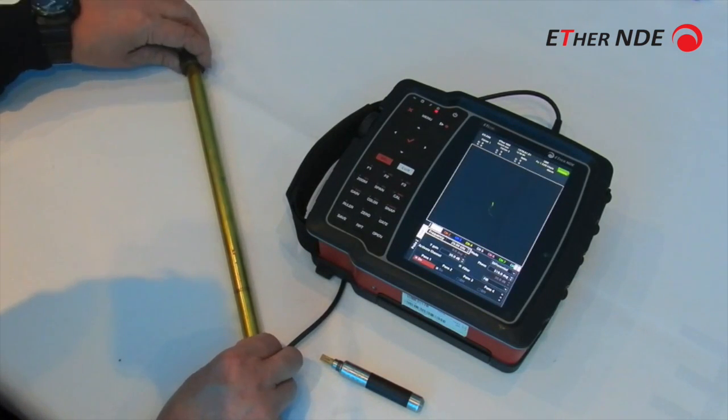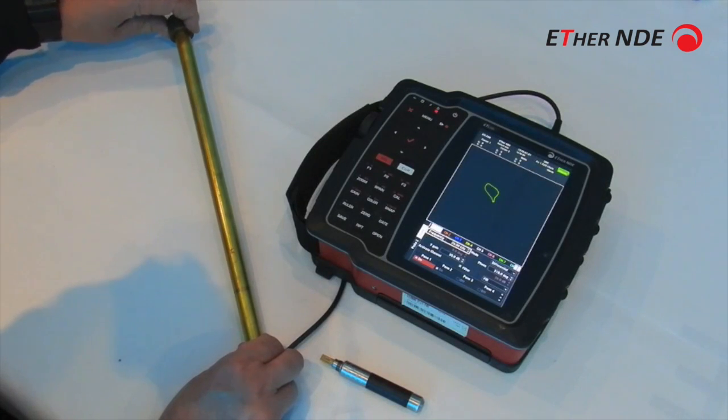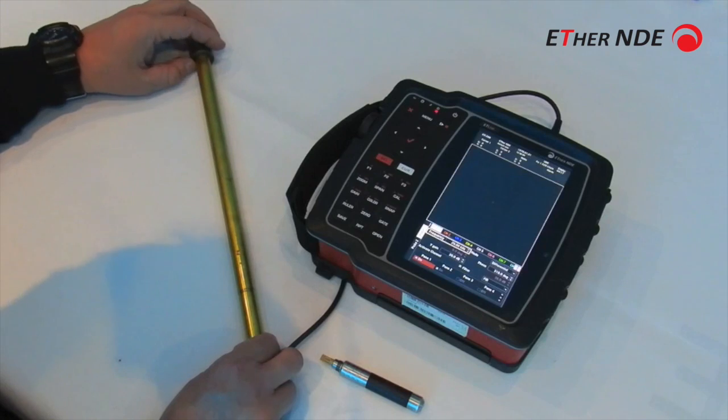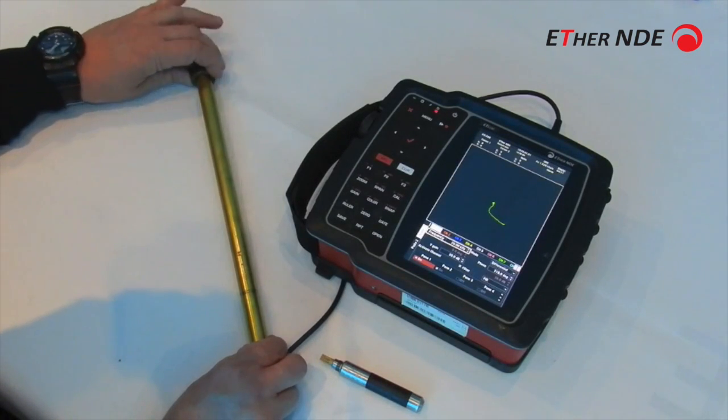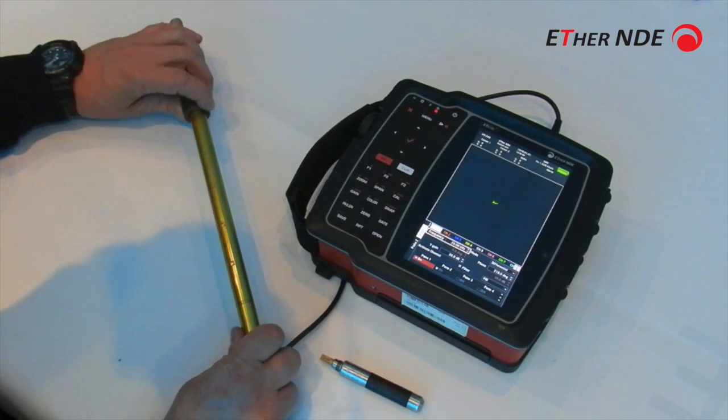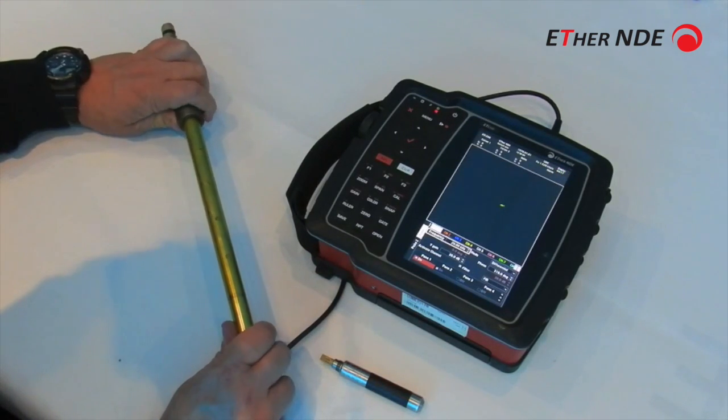And then this is support right signal. Okay, now one of the big applications for dual frequency is to remove support plates because they cause quite an annoying signal. Here I've positioned it beside the hole.